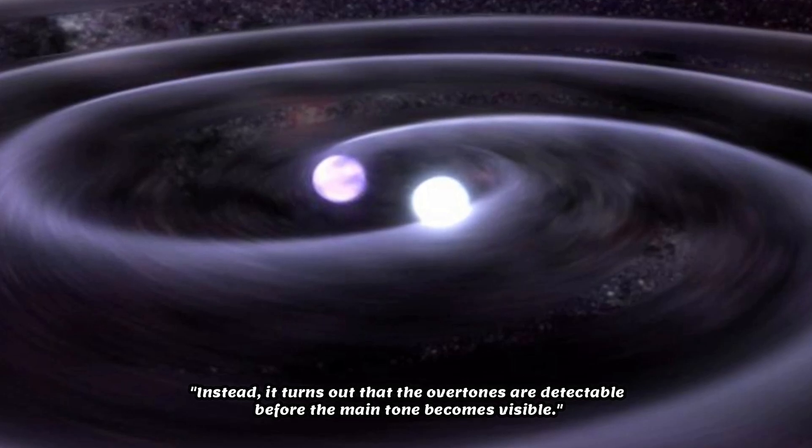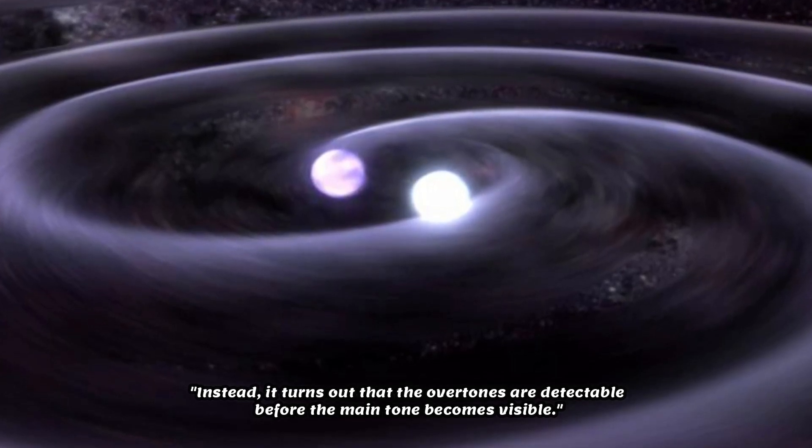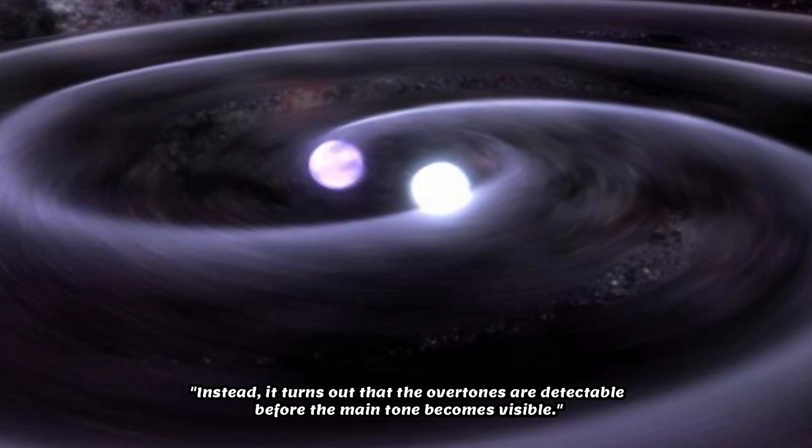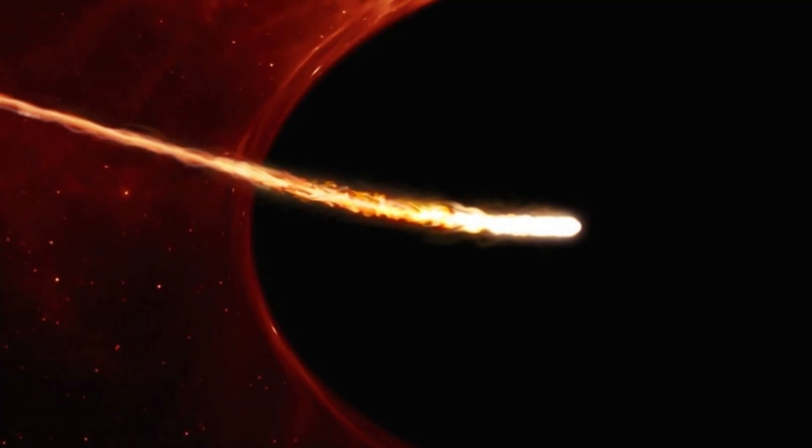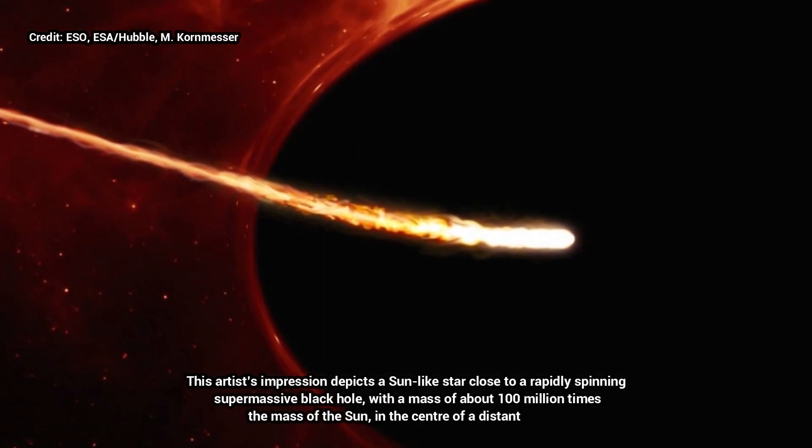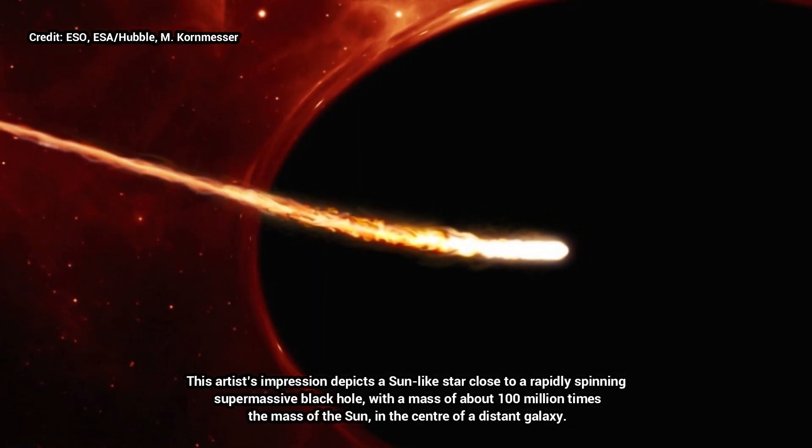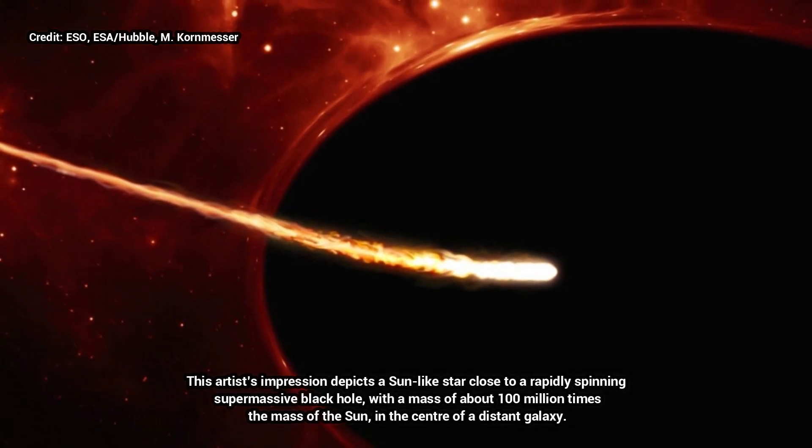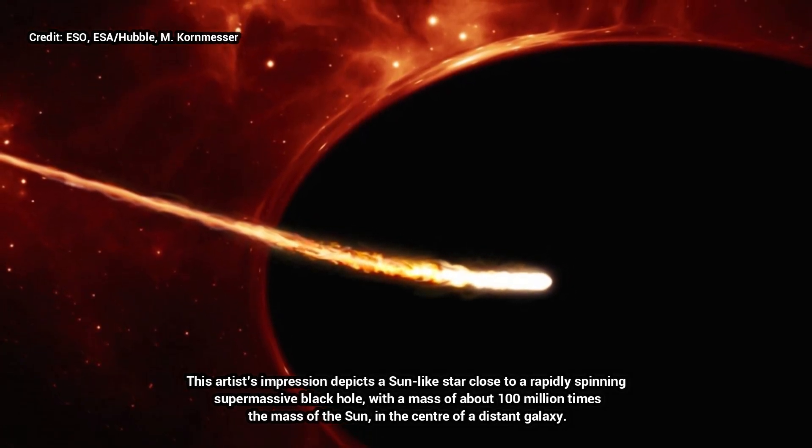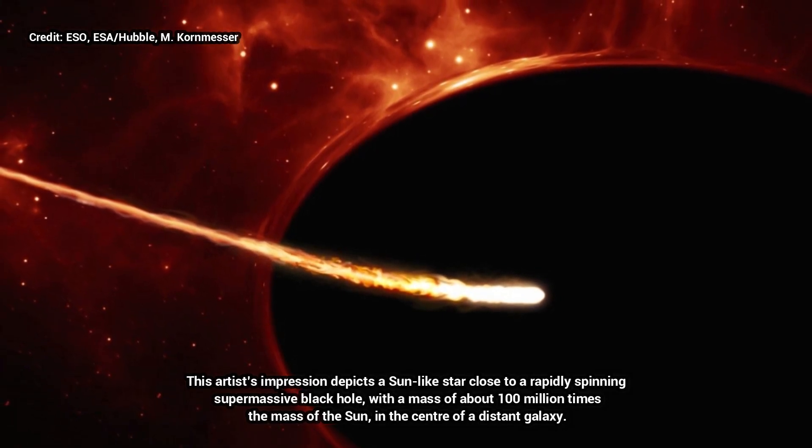Instead, it turns out that the overtones are detectable before the main tone becomes visible. The newfound overtones helped the researchers test the no-hair theorem for black holes—the idea that there are no other characteristics, or hairs, needed to define a black hole other than mass or spin.